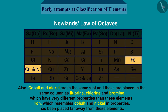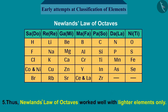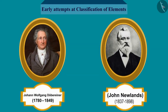Fifth, Iron, which resembles Cobalt and Nickel in properties, has been placed far away from these elements. Additionally, with the discovery of noble gases, the Law of Octaves became irrelevant. Thus, Newland's Law of Octaves worked well with lighter elements only.